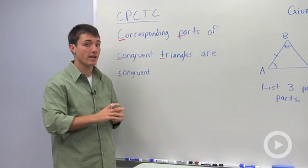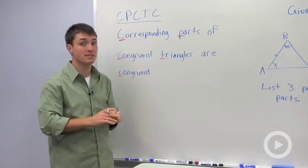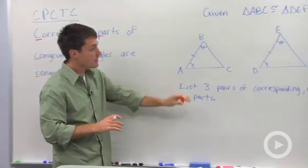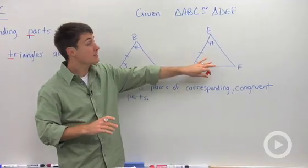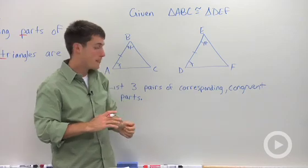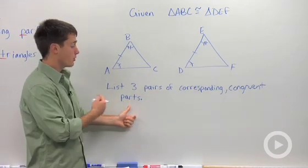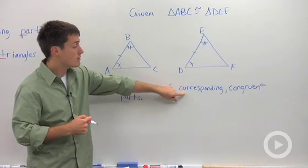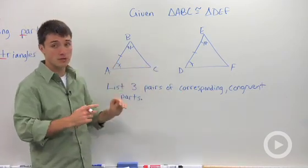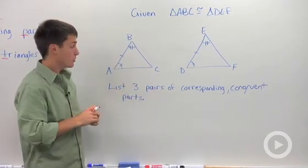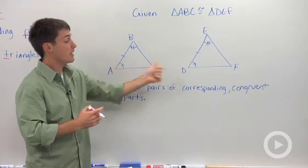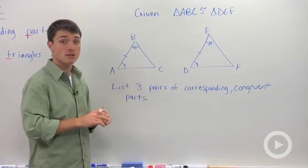Let's look at a quick example to apply CPCTC. So let's say we had two triangles, where I said these two triangles are congruent. I'm going to ask you, what are three pairs of corresponding congruent parts? Corresponding means they're in the same position in the two triangles. Congruent because we accept the fact that these two must be congruent.